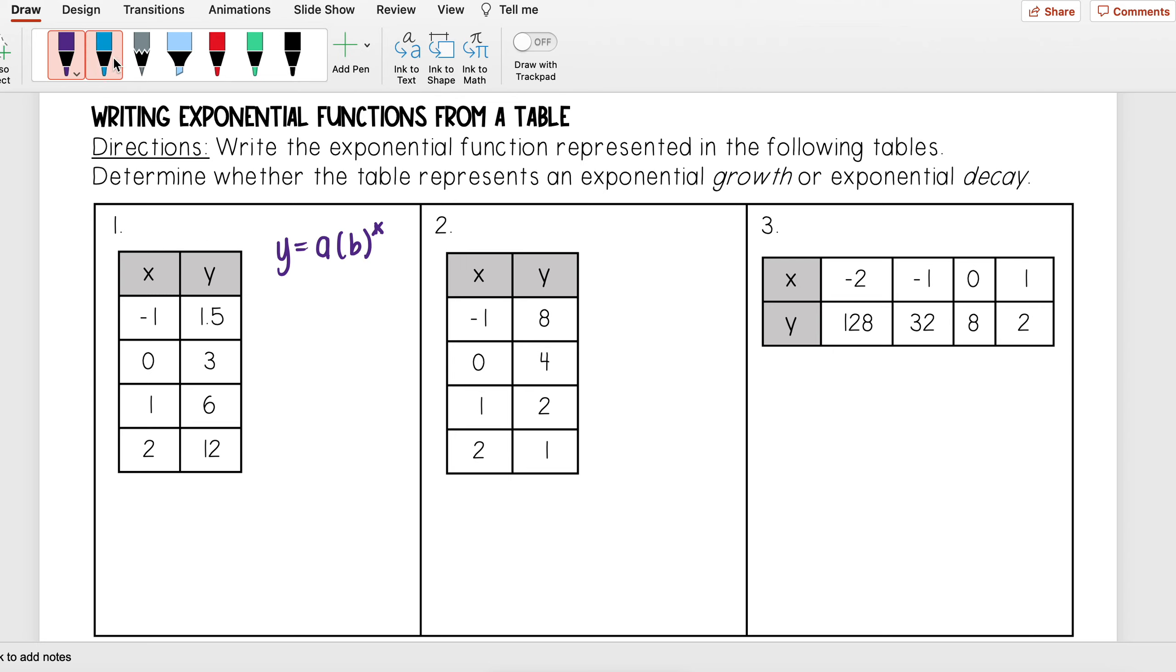We're going to remember that my a value is my y-intercept, and my y-intercept is the point where x is zero. I'm going to look at my table and see where x is zero. I see it's right here, so that means that my a value is going to be three, because my a value is my y-intercept when x is zero.